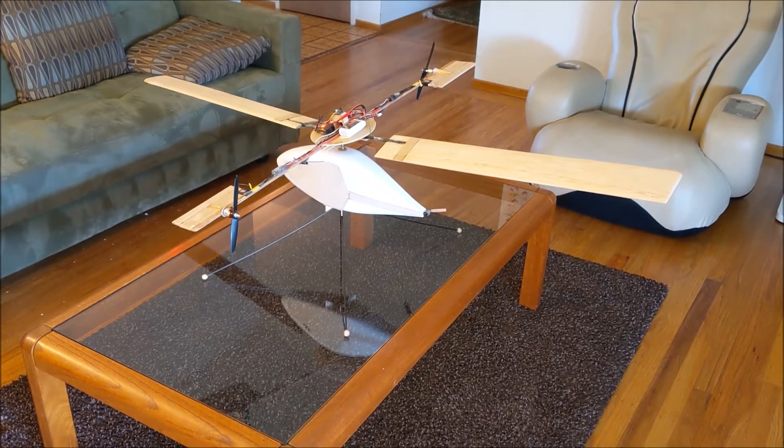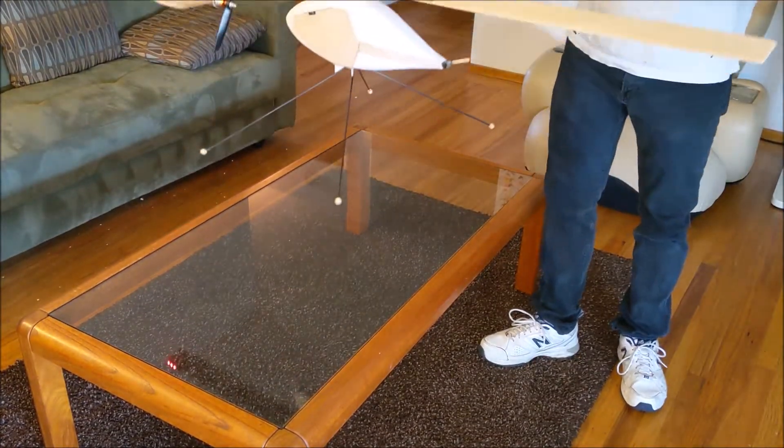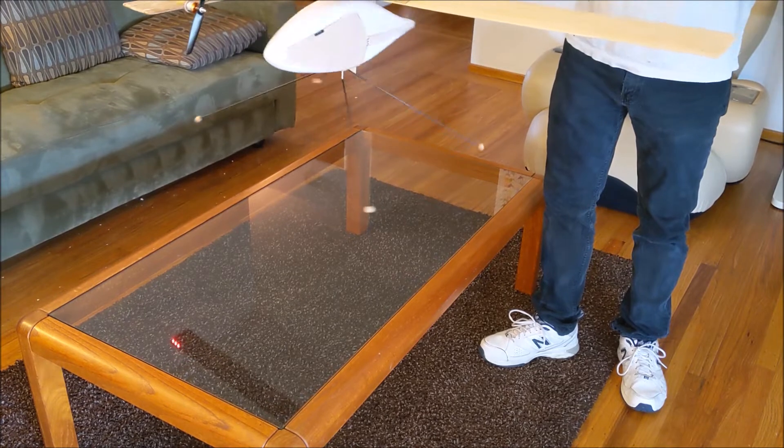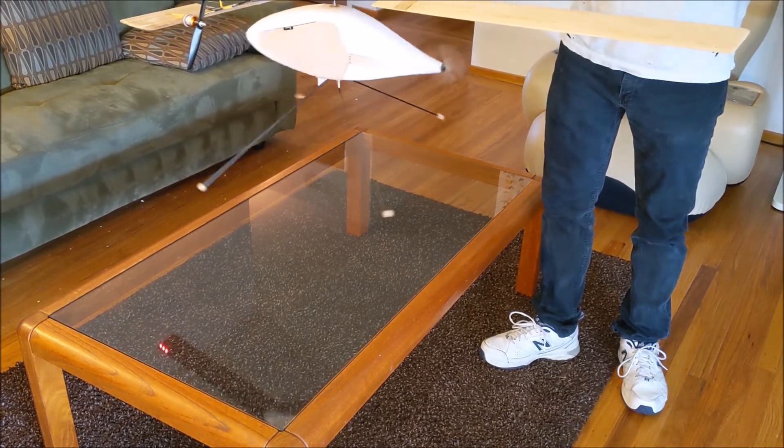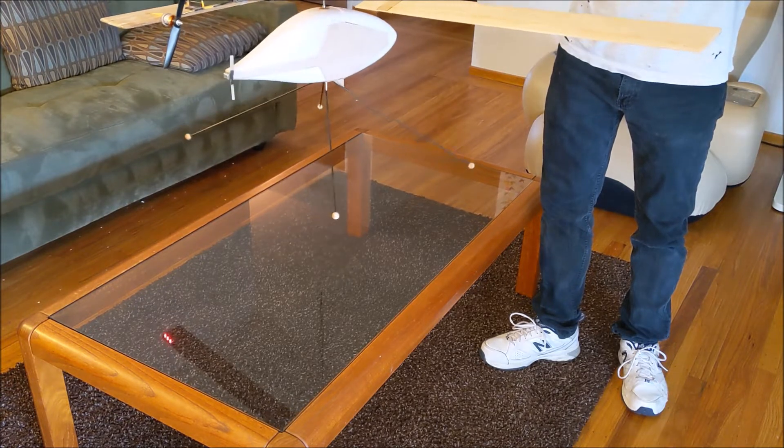Now I'll demonstrate how the fuselage is stabilized by the tail rotor. You can see here I can make the fuselage spin around, but if I release the stick, it stops. If I spin it the other way, it stops.